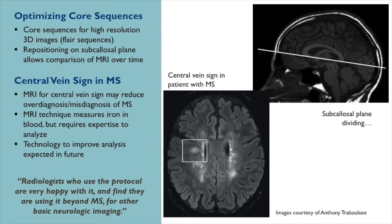The MRI recommended to detect the central vein sign is really just an additional sequence. The central vein sign is based on susceptibility-weighted imaging, which was traditionally used for fMRI or functional MRI studies. It has evolved to collect more interesting information beyond fMRI, and the central vein sign evolved from that technique, which detects iron — particularly within blood. It's a very useful technique.